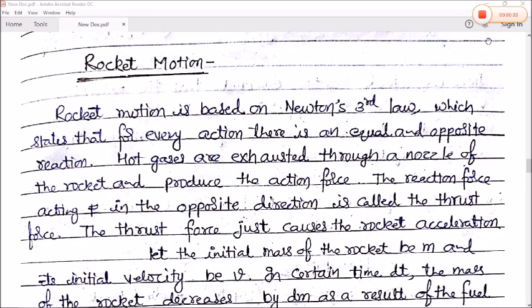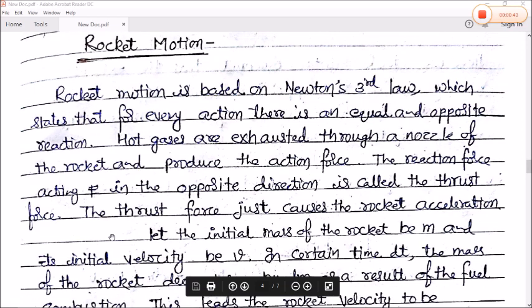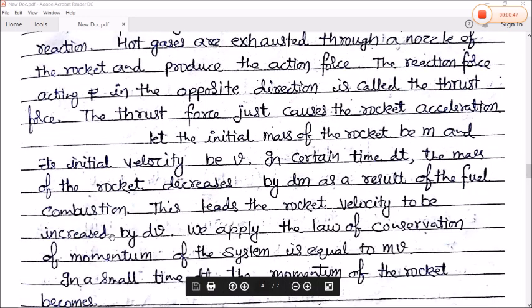Today we are going to study the Variable Mass System application, which is very important. One is Rocket Motion. Rocket Motion is based on Newton's third law, which states that for every action there is an equal and opposite reaction. Hot gases are exhausted through a nozzle of a rocket and produce the action force. The reaction force acting in the opposite direction is called the thrust force. The thrust force just causes the rocket acceleration.